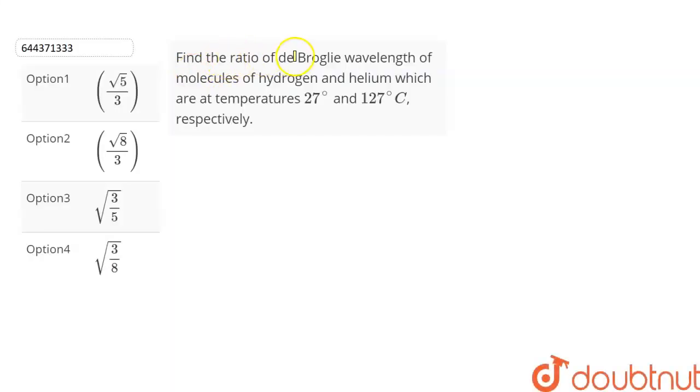The question is find the ratio of de Broglie wavelength of molecules of hydrogen and helium which are at a temperature of 27 degrees celsius and 127 degrees celsius respectively. We are given four options from which we have to choose the correct option. Let's find out.